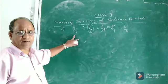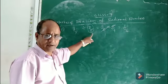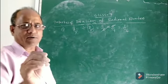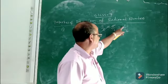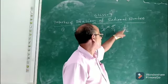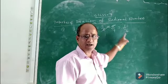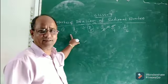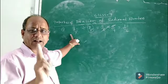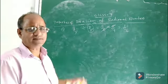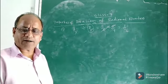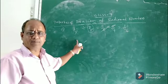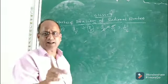So, 2 by 5 is a rational number divided by another rational number 4 by 5. The quotient is 1 by 2. Now, is 1 by 2 a rational number? Yes, it clearly is a rational number because it is in the form p by q, where p and q are integers — 1 and 2 are integers — and q is not equal to 0. So the first property: the quotient of two rational numbers is again a rational number.